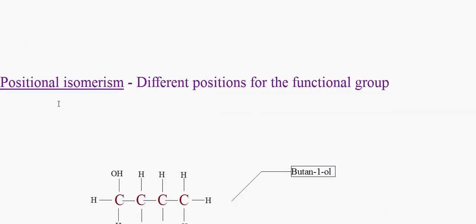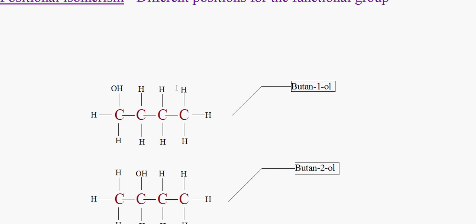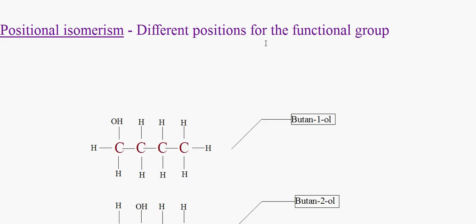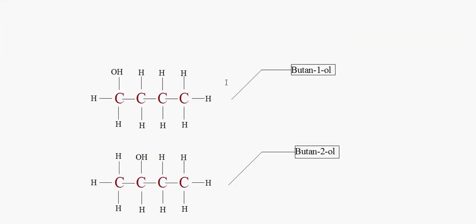So I'm going to move on to the second type, which is positional isomerism. This is where the functional group has different positions. So an example of this is where you have butan-1-ol, where the OH group is on the first carbon.